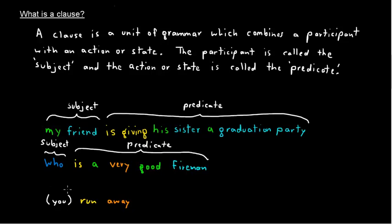Okay. And let's look at the last one. You is the participant or the subject. And we do have action here. And the action is run away. And this is the predicate.